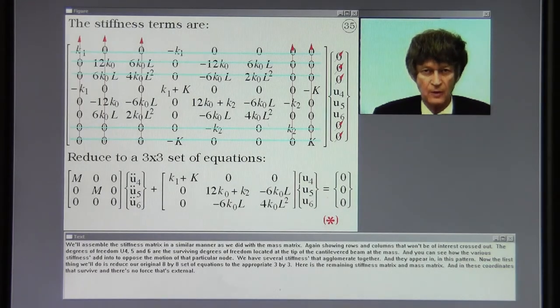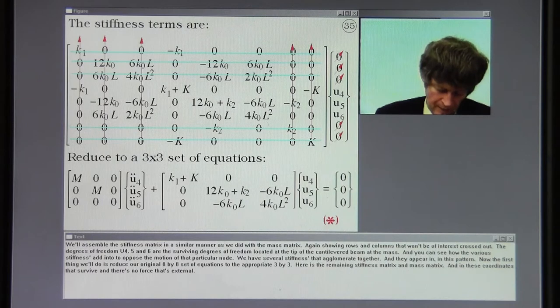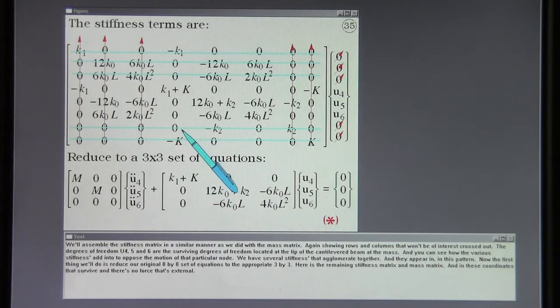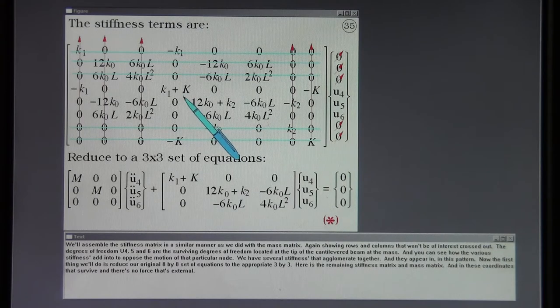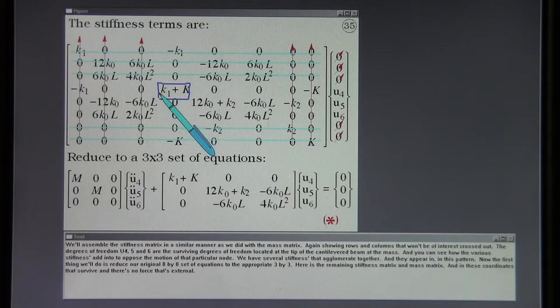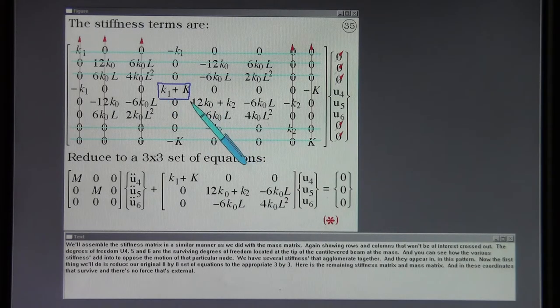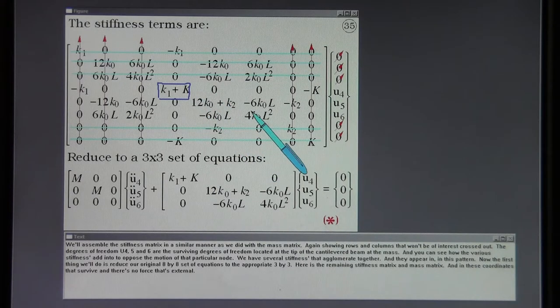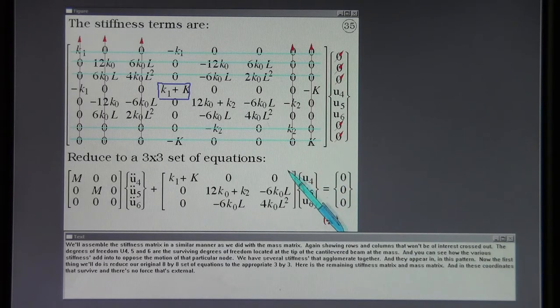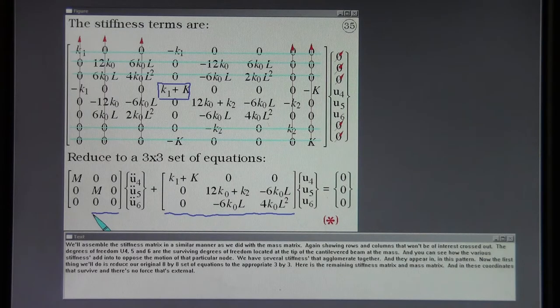We'll assemble the stiffness matrix in a similar manner as we did with the mass matrix. Again showing rows and columns that won't be of interest crossed out. The degrees of freedom U4, 5 and 6 are the surviving degrees of freedom located at the tip of the cantilever beam at the mass. You can see how the various stiffnesses add in to oppose the motion of that particular node. We have several stiffnesses that agglomerate together and they appear in this pattern. The first thing we'll do is reduce our original eight by eight set of equations to the appropriate three by three. Here is the remaining stiffness matrix and mass matrix and in these coordinates that survive and there's no force that's external.